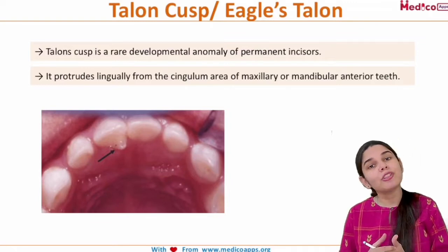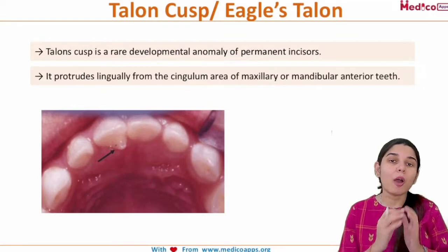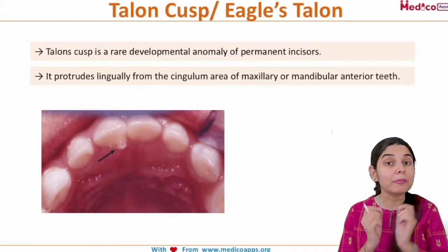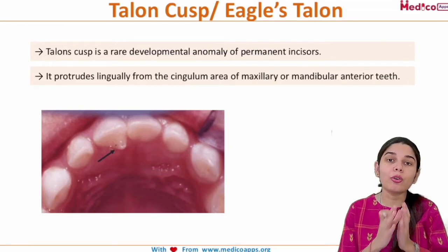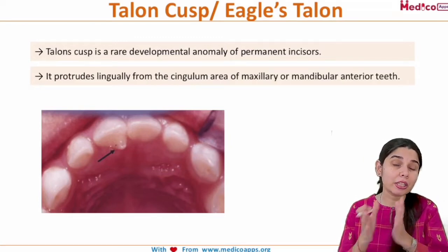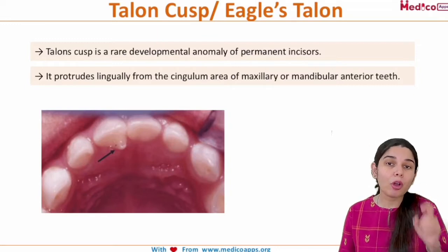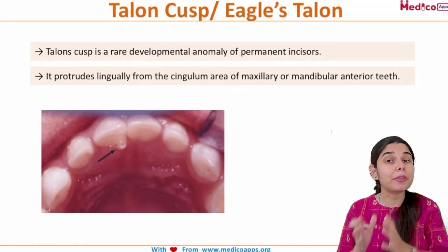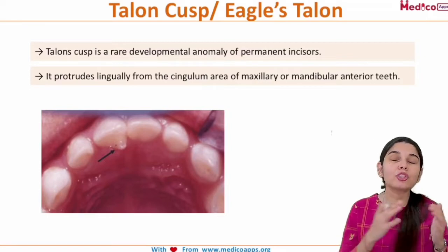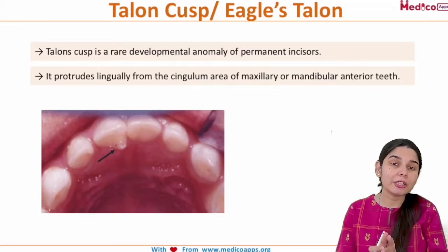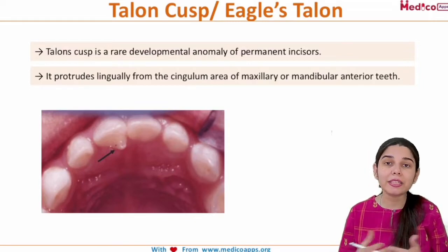Talon's Cusp is also known as Eagle's Talon. The term 'talon' basically means a claw. So when we say Eagle's Talon, we are talking about a structure which appears like the claw of an eagle. Talon's Cusp is a rare developmental anomaly which is present in the teeth.